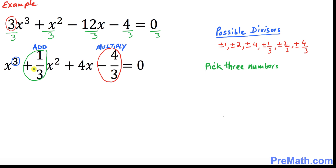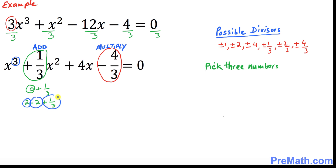We need to pick three numbers. I want you to manipulate this number: 1 over 3 can be written as 0 plus 1 over 3. Now since we need three numbers, that zero can be written as 2 minus 2, and then plus 1 over 3. We now have three numbers: positive 2, negative 2, and positive 1 over 3. If you add them you get 1 over 3, and if you multiply them you get negative 4 over 3.